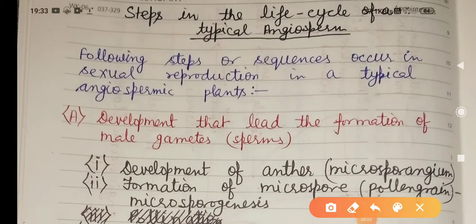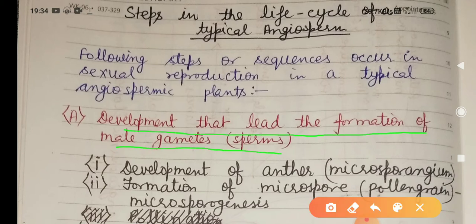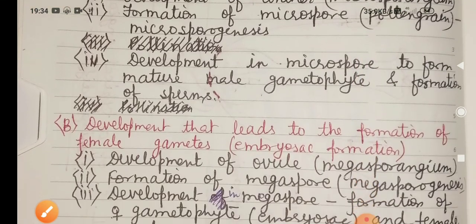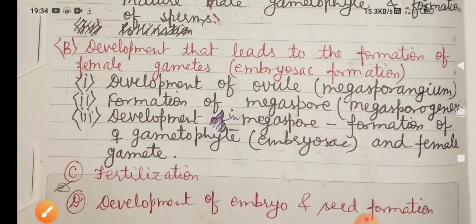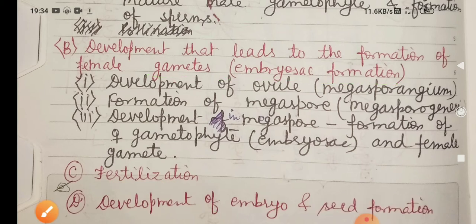Dear students, today we will discuss the steps in the life cycle of a typical angiospermic plant. It comprises mainly four major steps: A) development that leads to formation of male gametes or sperm, B) development that leads to formation of female gametes or embryo sac, C) fertilization, and D) development of embryo and seed formation.